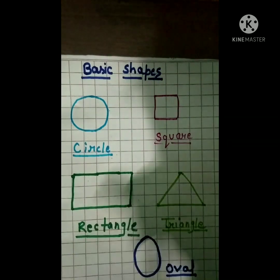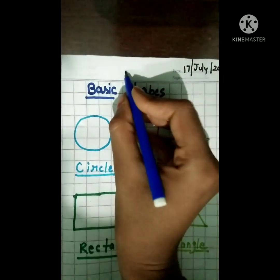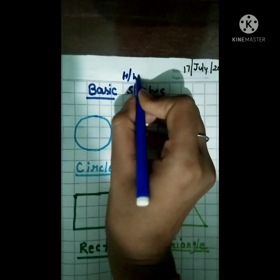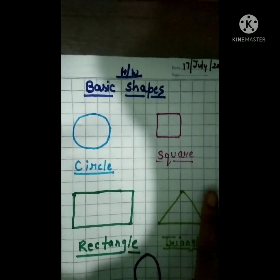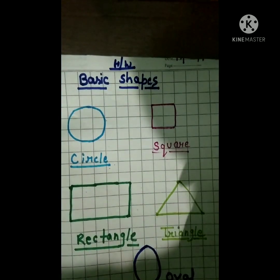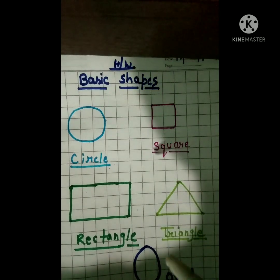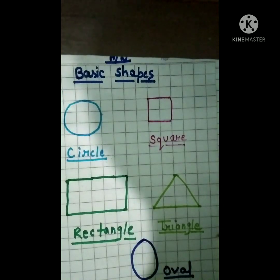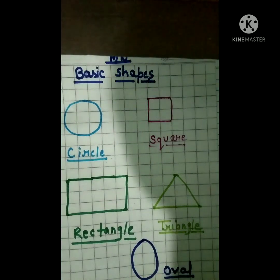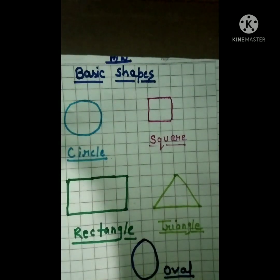So, this is your homework. Yeh aapka homework hai. Aapko apni mass copy mein, jaise maine shapes banaya hai, aise aapko apni mass copy mein shapes draw karni hain, okay? Neat and clean, saaf saaf — jaise maine kiya hai, aap bhi apni copy mein draw karenge. And learn bhi karna hai aapko, okay?